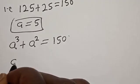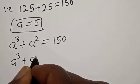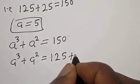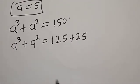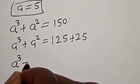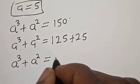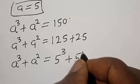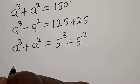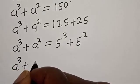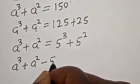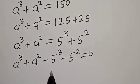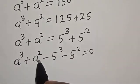Now we have A raised to power 3 plus A squared is equal to 150, which is 125 plus 25. A raised to power 3 is 125, which is 5 raised to power 3, and 25 is 5 squared. Now we have A raised to power 3 plus A squared minus 5 raised to power 3 minus 5 squared is equal to 0. Now let's compare: A raised to power 3, 5 raised to power 3, A squared, 5 squared.